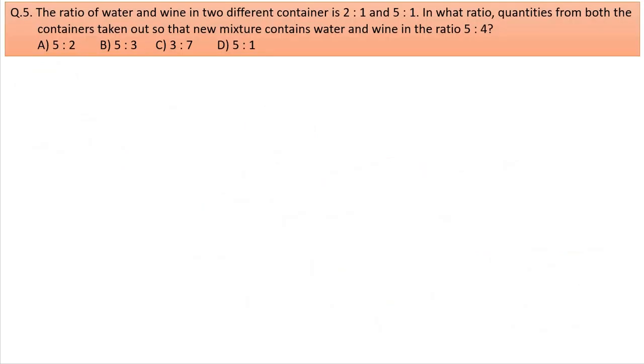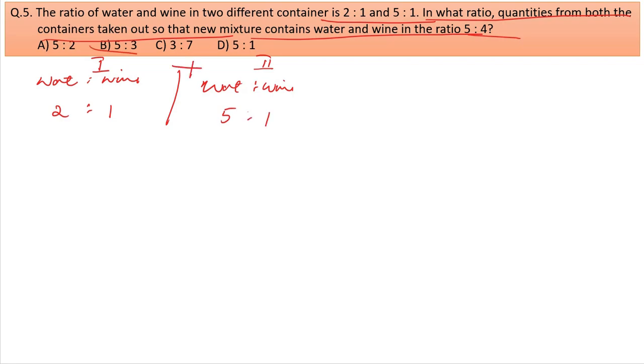Question 5: The ratio of water and wine in two different containers is 2 to 1 and 5 to 1. In what ratio should quantities from both containers be taken so that the new mixture contains water and wine in the ratio 5 to 4? Container 1 has water to wine as 2 to 1, container 2 has 5 to 1.